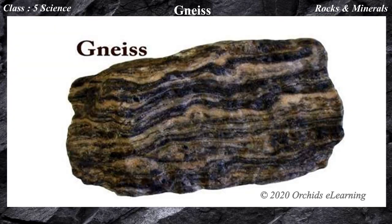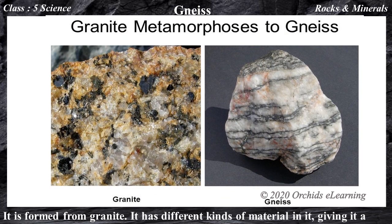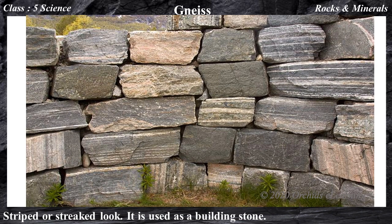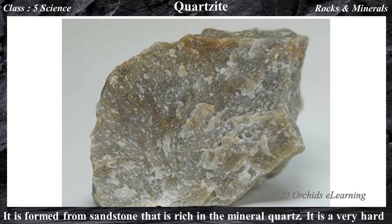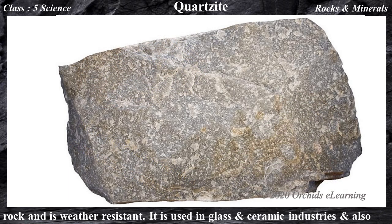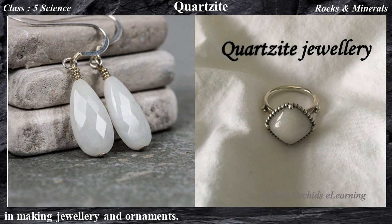Gneiss — it is formed from granite. It has different kinds of material in it, giving it a striped or streaked look. It is used as a building stone. Quartzite — it is formed from sandstone that is rich in the mineral quartz. It is a very hard rock and is weather resistant. It is used in glass and ceramic industries and also in making jewelry and ornaments.